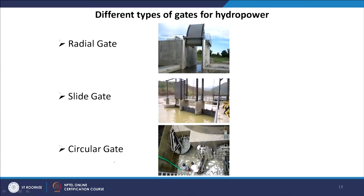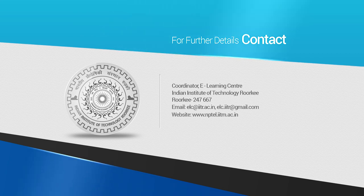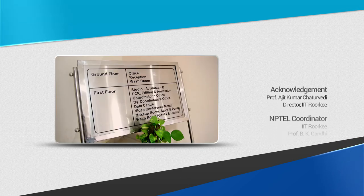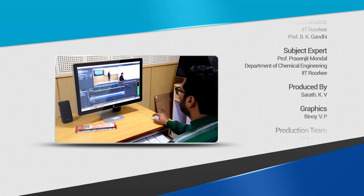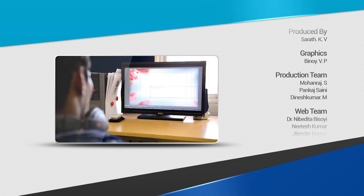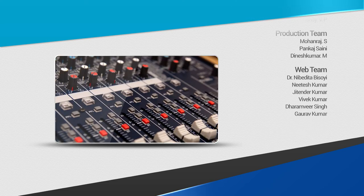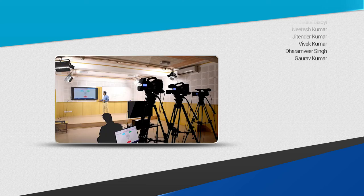There are different types of gates used in hydropower plants — radial gates, slide gates, and circular gates — which help control the flow of water. Different types of valves are also used. This concludes our discussion on hydro energy production. Thank you very much for your patience.